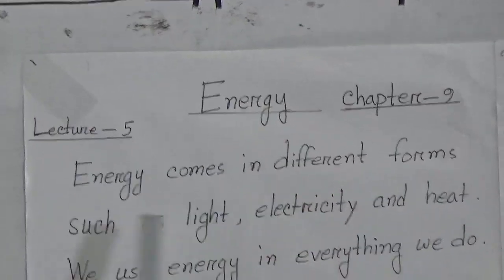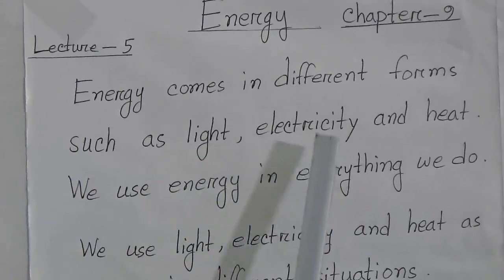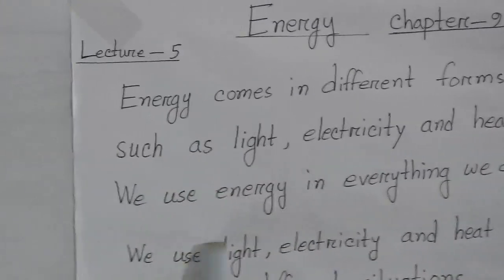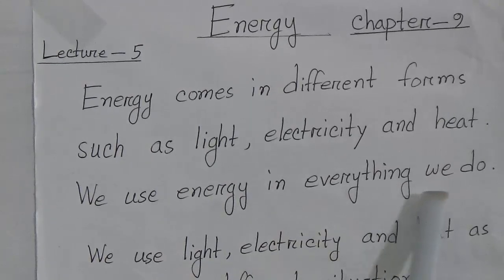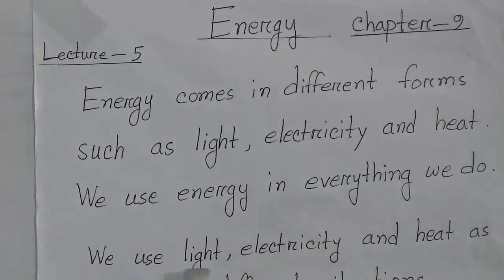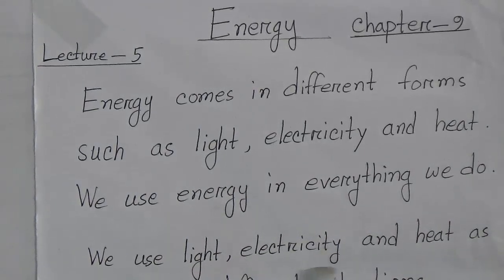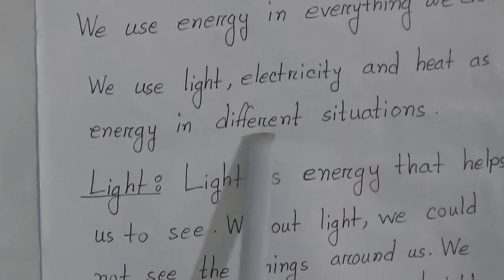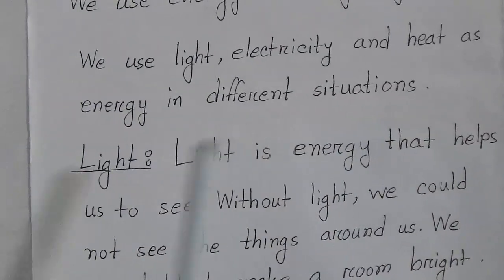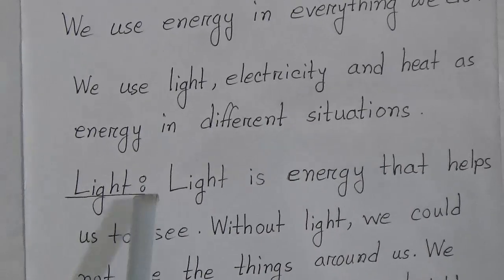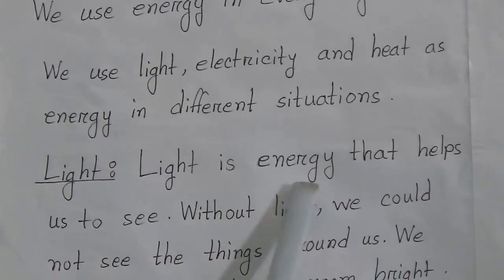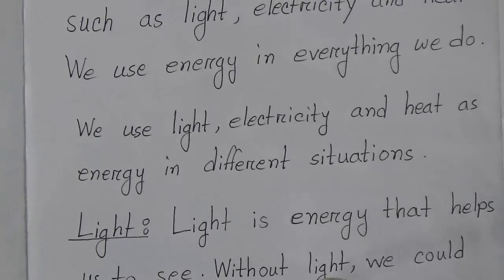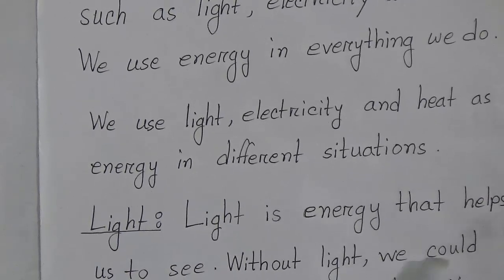Energy comes in different forms such as light, electricity, and heat. We use energy in everything we do. We use light, electricity, and heat as energy in different situations. Light is energy that helps us to see — without light we could not see the things around us.